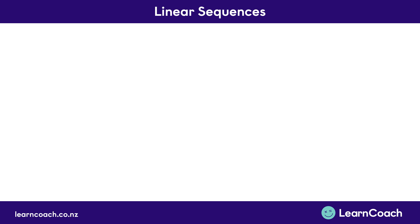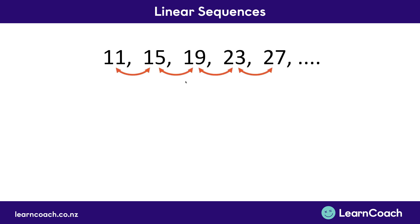Welcome to the video on linear sequences. Sequences are just series of numbers that go one after the other. For example: 11, 15, 19, 23 and 27.